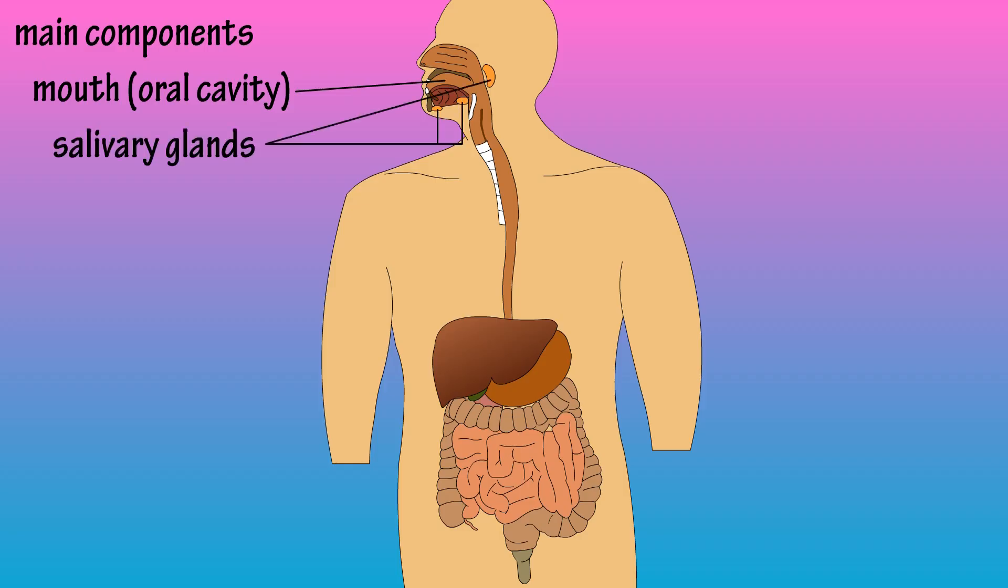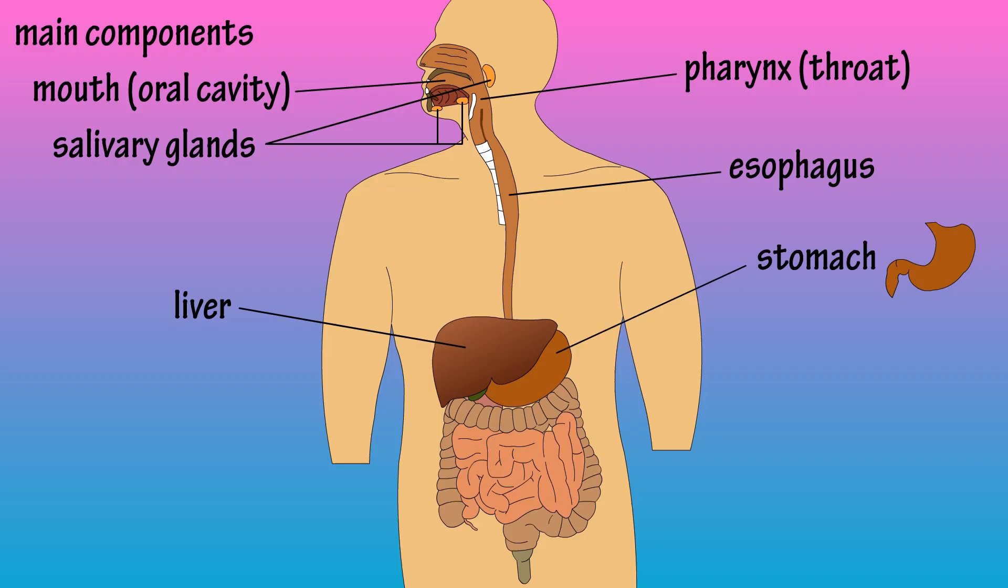Starting here with the mouth and salivary glands, which lead to the pharynx, or what we call the throat. Next we have the esophagus here, which connects to the stomach. The liver is here, along with the gallbladder, and the pancreas is back here.